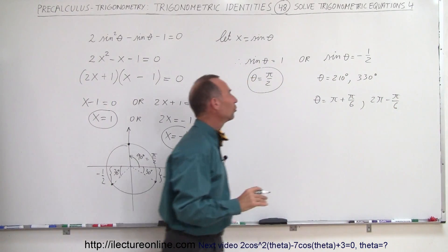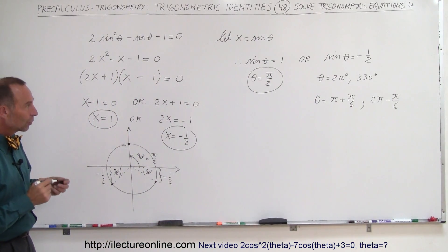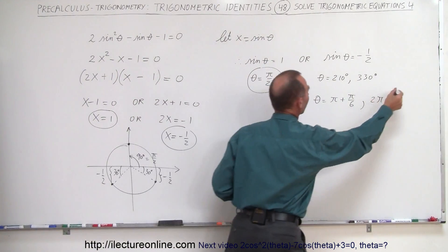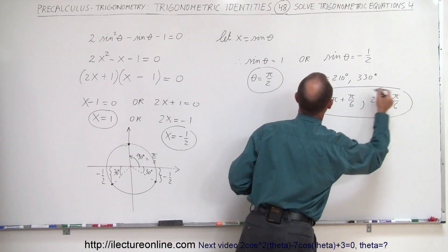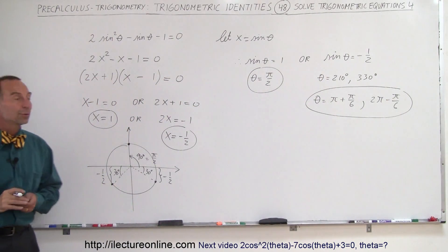And those would be the other two possibilities in terms of radians instead of degrees. So those are the three possible solutions to this particular equation. That's how we do that.